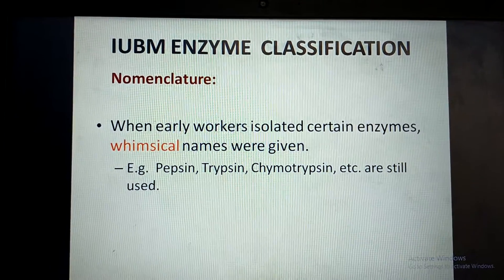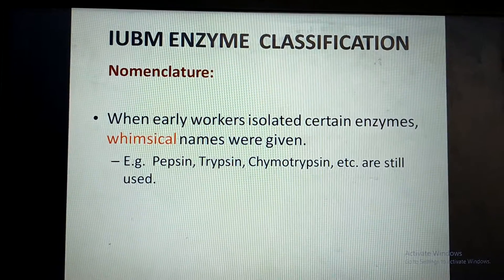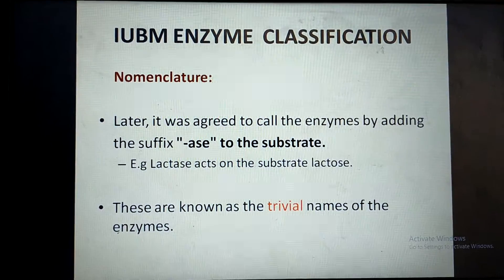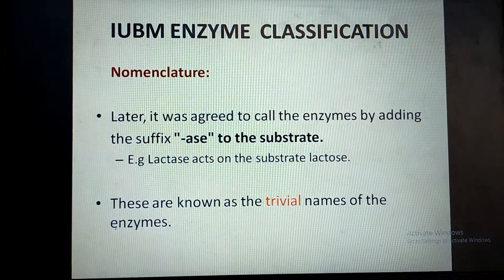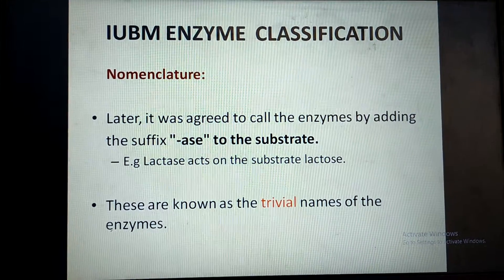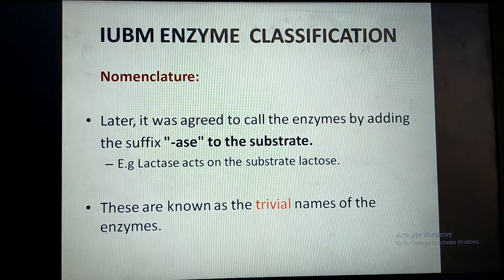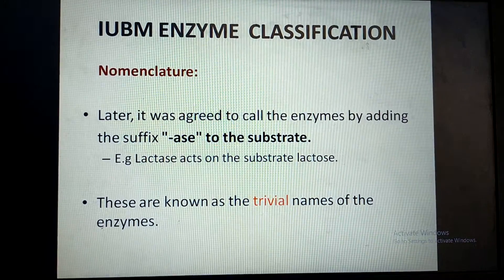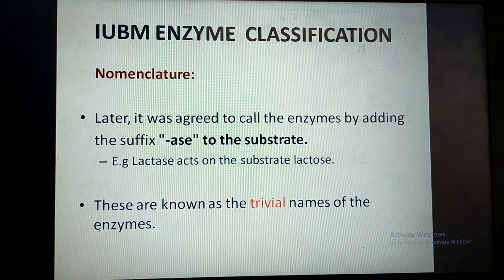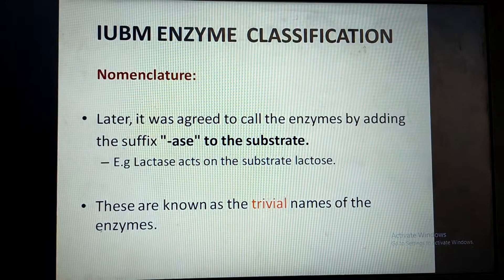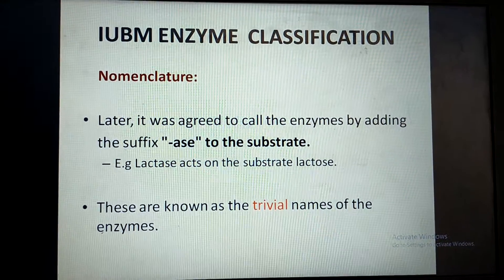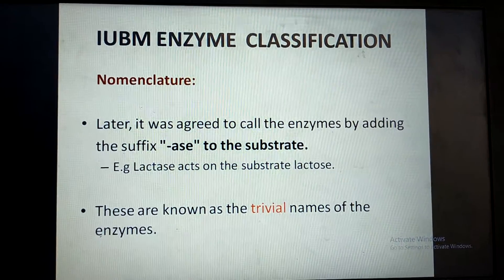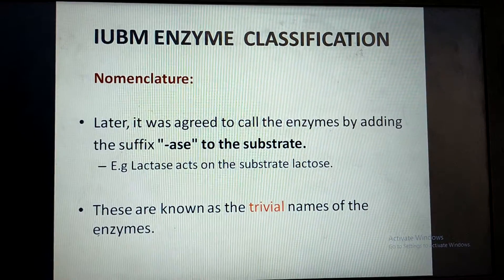When enzymes were discovered in early days they were named by whimsical names like pepsin, trypsin, chymotrypsin etc. But when more and more enzymes were discovered, it was decided that enzymes were named by adding a suffix -ASE to the name of the substrate on which the enzyme acts. For example, the enzyme acting on lactose is named lactase, the enzyme acting on maltose is named maltase, and sucrase acts on sucrose. These were called trivial names of the enzymes.